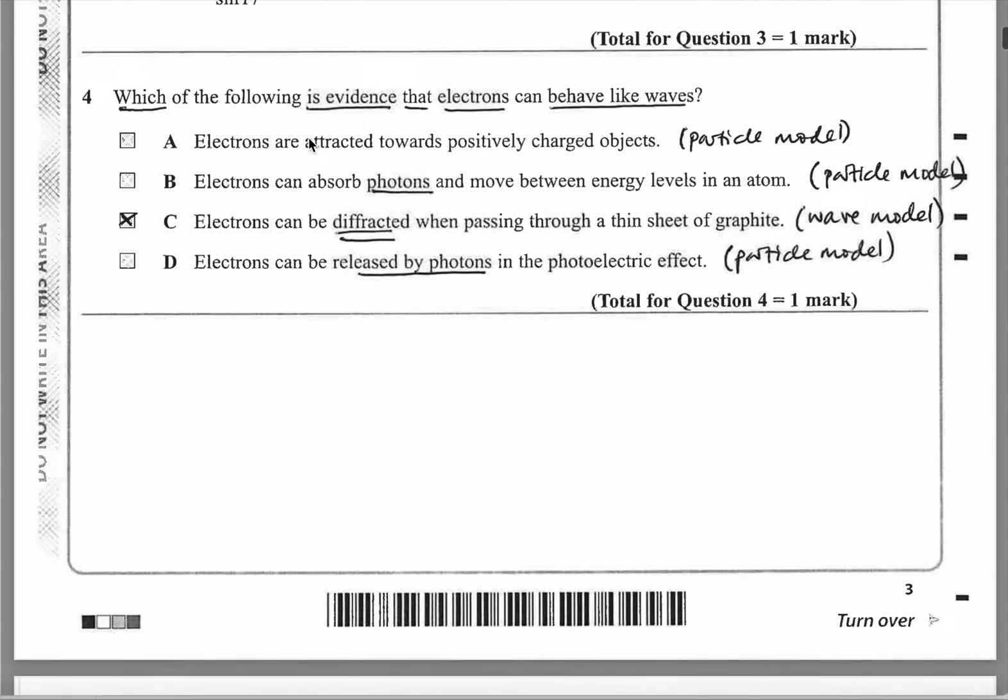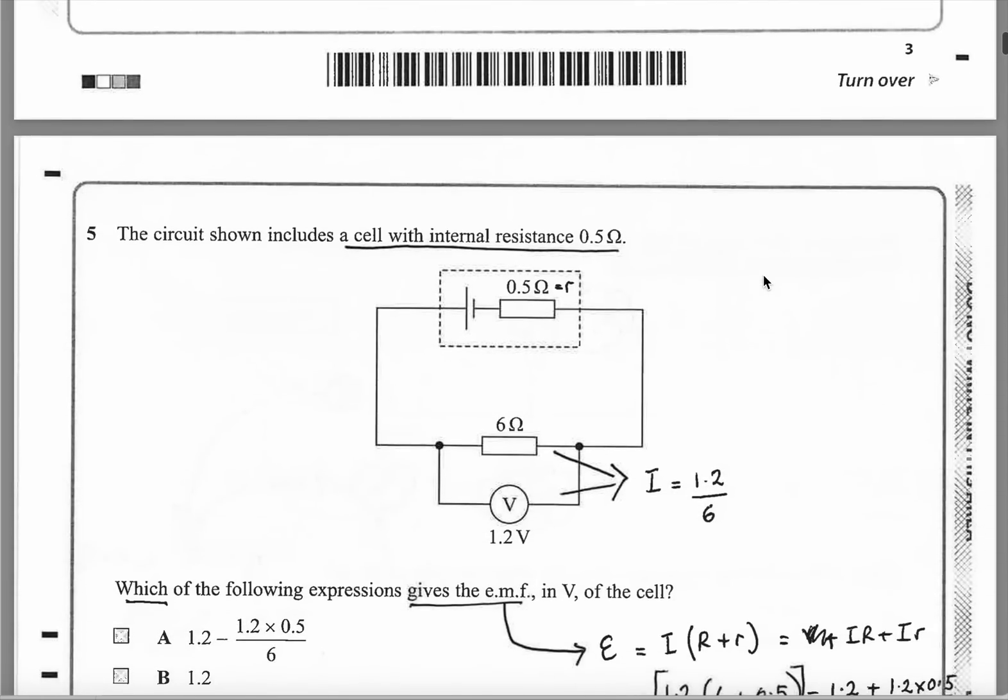Question 4. Which of the following is evidence that electrons can behave like waves? Electrons are attracted towards positively charged objects - that's a particle model. Electrons can absorb photons - photons is the particle model. And move between energy levels - that's quantum or particle model. C is a wave model because electrons can be diffracted. Light is diffracted. So if electrons can be diffracted, that can only be explained by the wave model, diffracted when passing through a thin sheet of graphite. Electrons can be released by photons - that's the photoelectric effect, which is explained by the particle model. Whenever it's photons, you know it's the particle model.